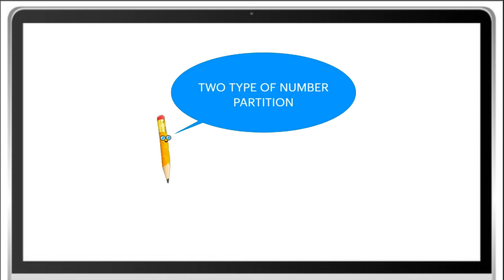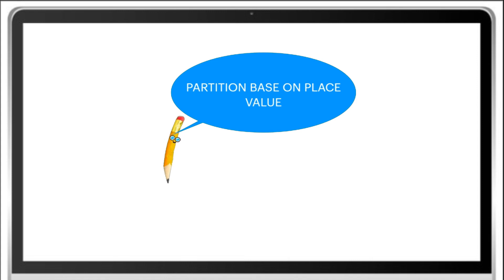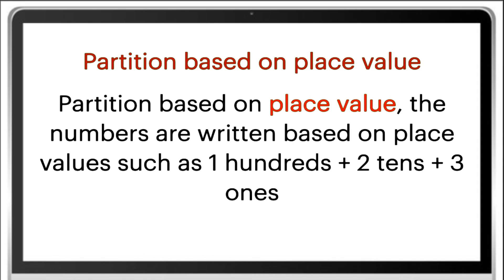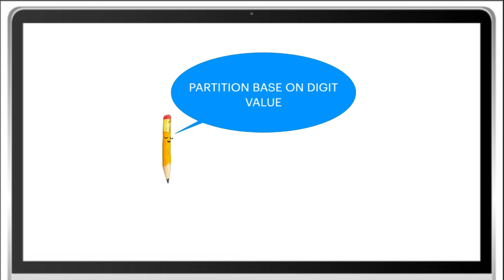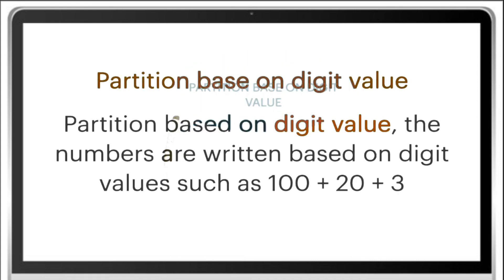Two types of number partition. First, partition based on place value — the numbers are written based on place values such as 1 hundreds plus 2 tens plus 3 ones. Second, partition based on digit value — the numbers are written based on digit values such as 100 plus 20 plus 3.